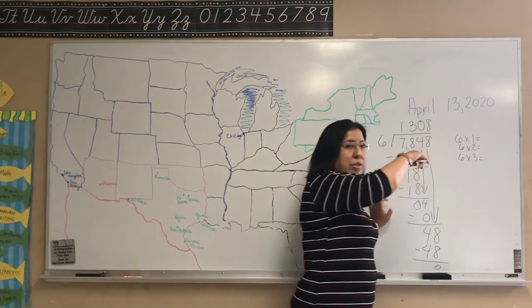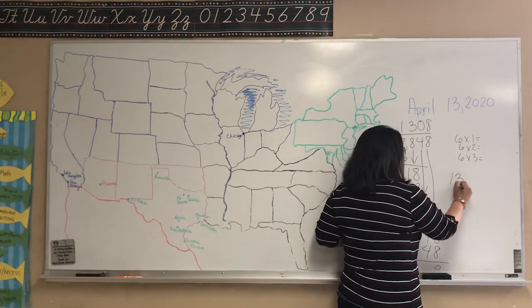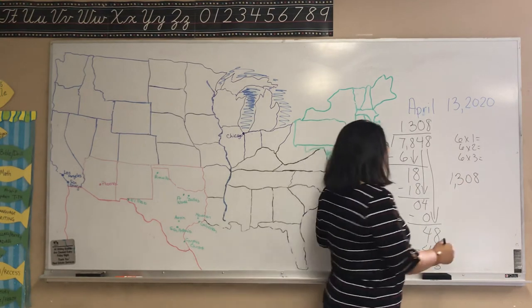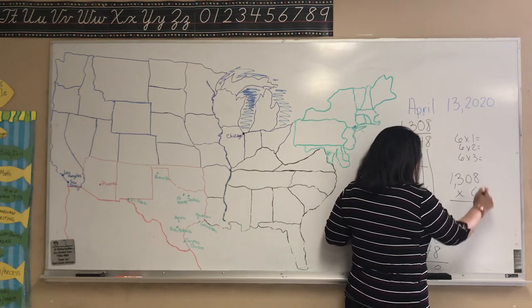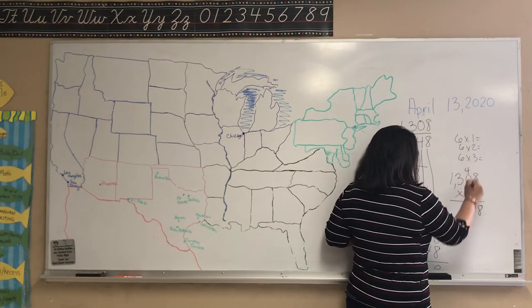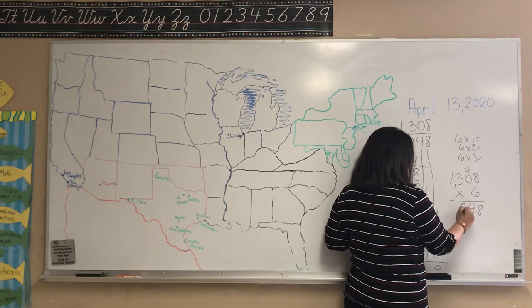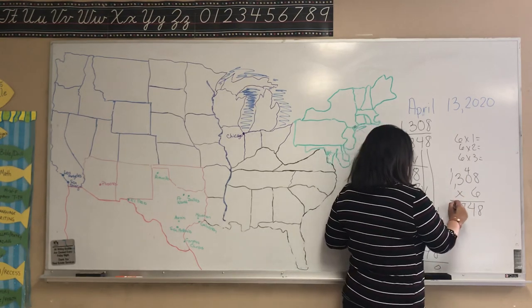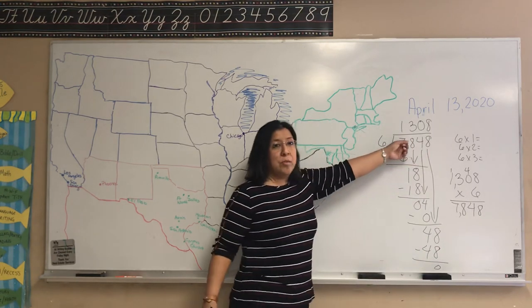In order to check it and make sure it is correct — some of y'all still are not sure how to check it — it's 1308 multiplied times six. Six times eight is 48, carry the four. Six times zero is zero, bring down your four. Six times three is 18, carry the one. And then the last one is seven. So it's 7,848. You have the same answer here as you do up here, so it is correct.